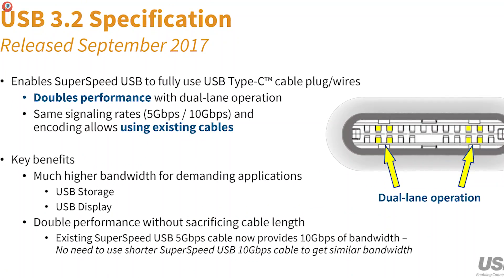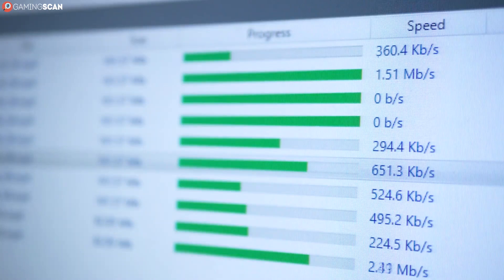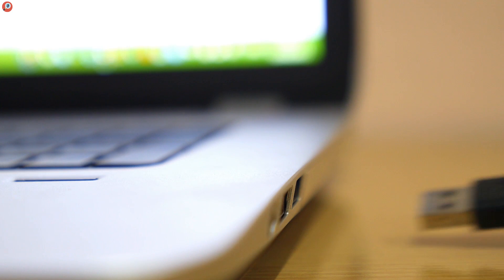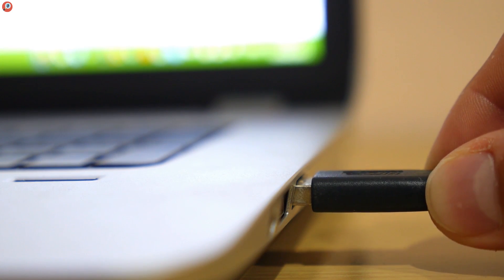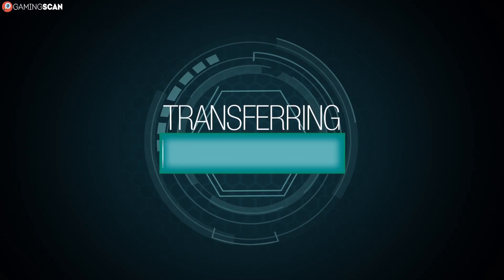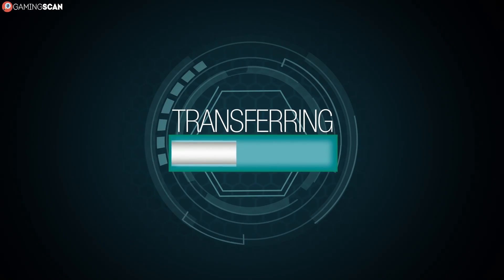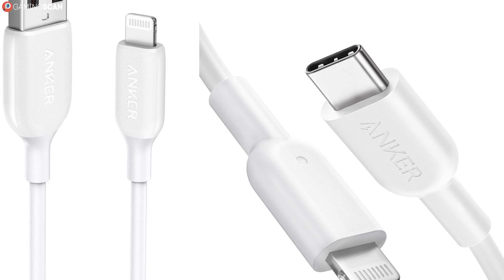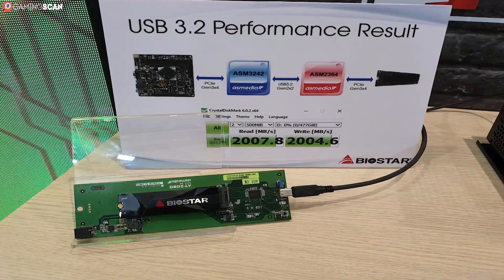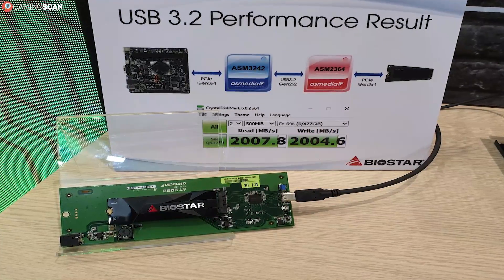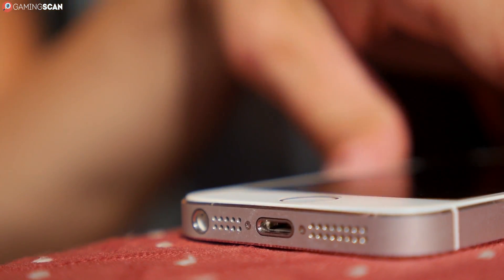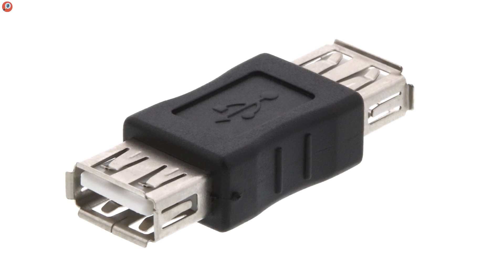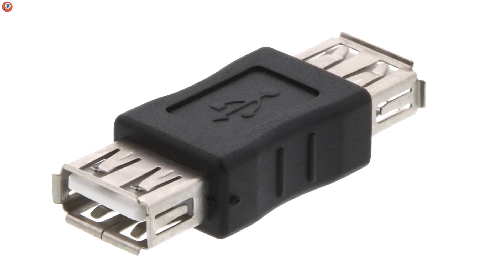Gen 1x1 and 1x2 both use the old 8b-10b encoding. Gen 1x1 has a 5 gigabit transfer speed, while the USB-C exclusive Gen 1x2 has 10 gigabits per second. Gen 2x1 and 2x2 share the new 128b-132b encoding; the former offers 10 gigabits per second, while the latter bumps this up to 20 gigabits per second, at the expense of being USB-C exclusive. USB 3.2 has clearly begun phasing out USB-A connectors in favor of USB-C — not only is Type-C faster, but it can be plugged in either way.